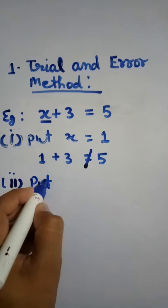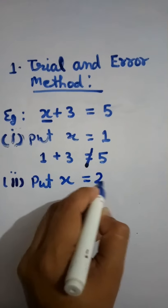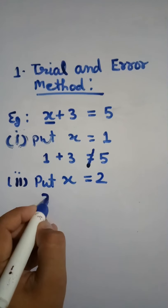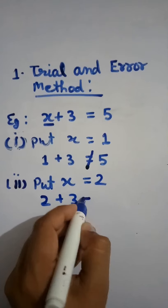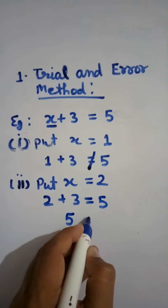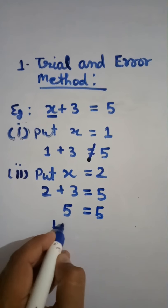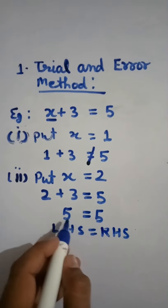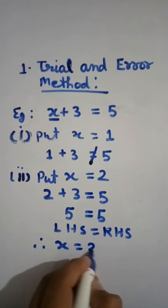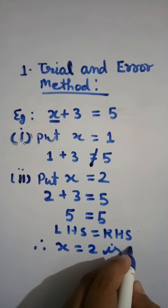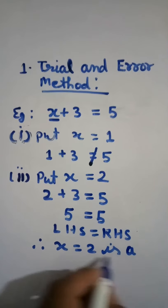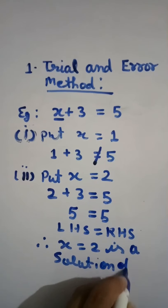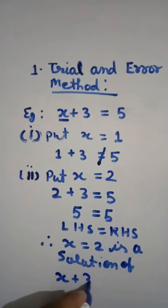Second, put x equal to 2. Replace x by 2: 2 plus 3 equals 5, which equals 5. LHS is equal to RHS — both sides are equal. Therefore, x equal to 2 is a solution of x plus 3 equals 5.